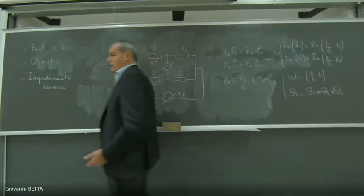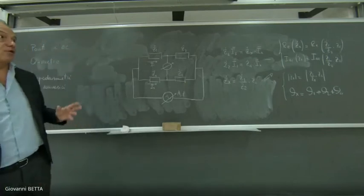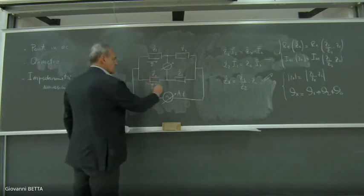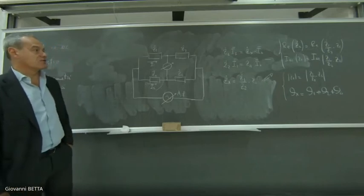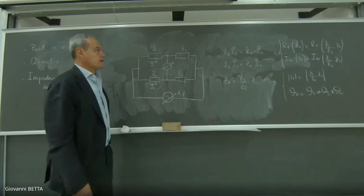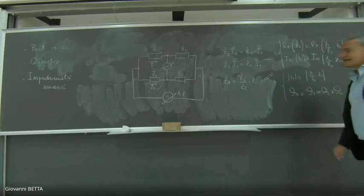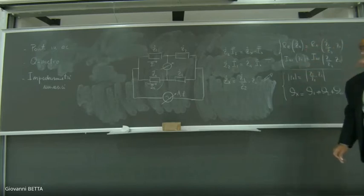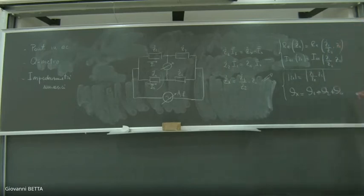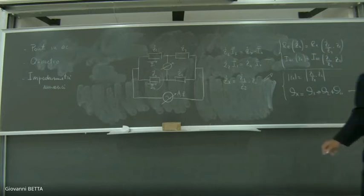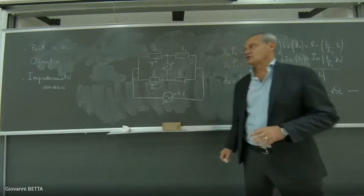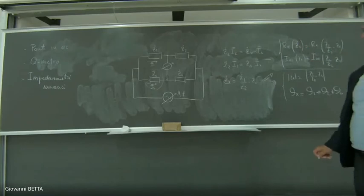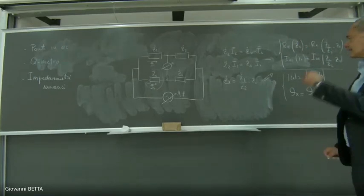Ho ottenuto quello di cui avevo bisogno: due equazioni in due incognite. Misurare un'impedenza incognita equivale a determinare i parametri del modello elettrico equivalente del condensatore o dell'induttore che ho sotto. Useremo sempre l'uguaglianza fra parte reale e parte immaginaria, e qualche volta l'equazione di equilibrio delle fasi come colpo d'occhio sul circuito per vedere se il ponte funziona correttamente.